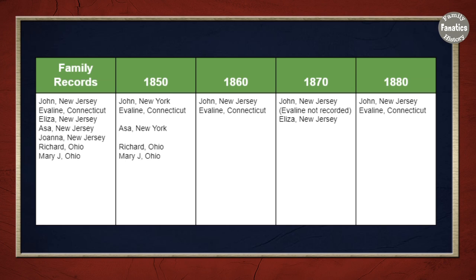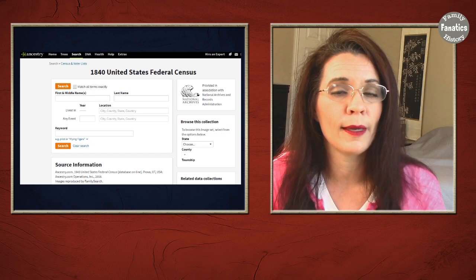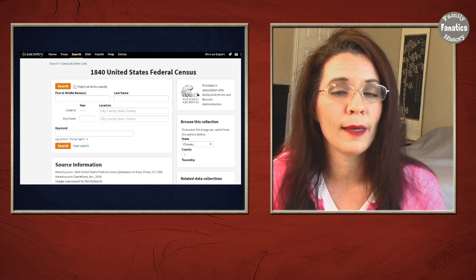I had found John Townley in census records from 1850 to 1880. He's not in 1890 even though he was still alive because the 1890 census fragments — the fewer than 7,000 names that survived did not happen to include him. I have evidence that his third child Joanna was born in New Jersey and his son Richard was born in Ohio, so this is the break where the family moved. I'm going to hop over to Ancestry.com and search for John Townley in the 1840 census using clues I've gathered.